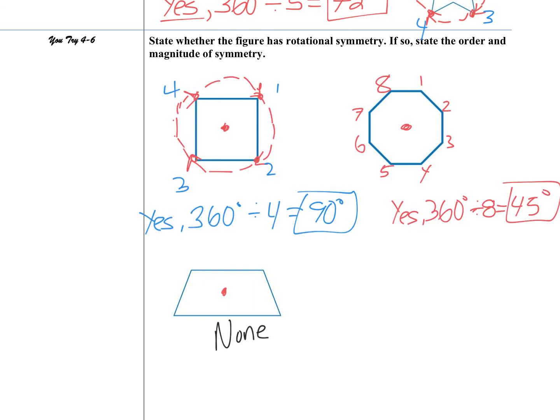So if you look here, this first one is a square, which if you turn it 90 degrees, we can get the same object. So we could turn it four times because there's four corners that are the same. Hence, 360 divided by four is 90. That's the magnitude. And yes, it can turn. Also, a regular octagon can be turned eight times. So yes, it's rotational and then divide by eight to get 45 degrees.